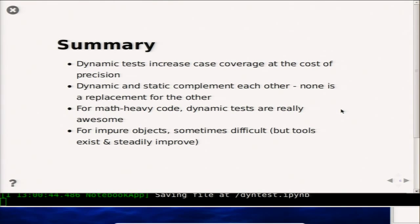To summarize: dynamic tests increase case coverage at the cost of precision. Dynamic and static testing complement each other — neither is a replacement for the other. Sometimes it makes sense to use both; sometimes it's more pragmatic to use just one. For math-heavy code, dynamic tests are really great. For less mathematical, more real-world code it can be more difficult, but tools are available and steadily improving. If you have a problem with any object type and think there should be a tool available, ask on the Hypothesis mailing list — they want to know.